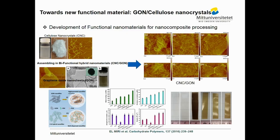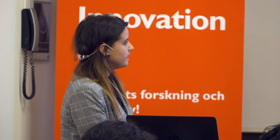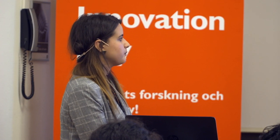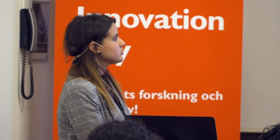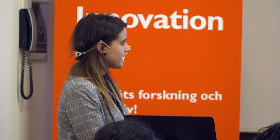One of the trendiest nanomaterials currently is the hybrid nano charge. We try to mix the CNC with graphene oxide nanosheets and use them as a hybrid nano charge in a polymer to create bio-nanocomposite films. What we obtain so far are films with enhanced mechanical properties. The method used is the evaporation casting method.